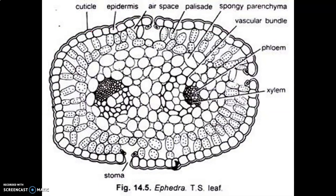Looking at the diagram: the outer side has a cuticle, then the upper epidermis. After that, two to three layers of chlorenchymatous, valley-shaped parenchyma with large intercellular spaces are present. In the center is the ground tissue, with two vascular bundles. The xylem is toward the inner side, and the collateral xylem and phloem are present. It is closed — there is no cambium present. The stomata, if present, are sunken stomata. This is the TS of the Ephedra leaf.